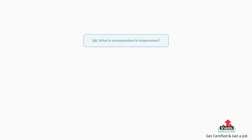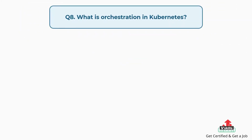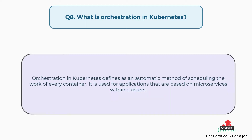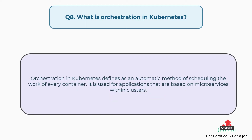Question number eight: What is orchestration in Kubernetes? Orchestration in Kubernetes is defined as an automatic method of scheduling the work of every container. It is used for applications that are based on microservices within clusters.